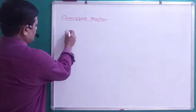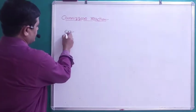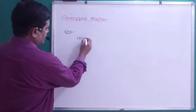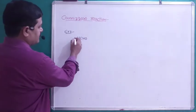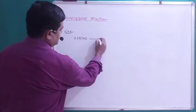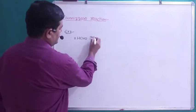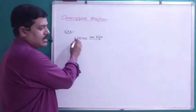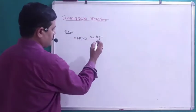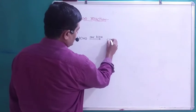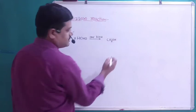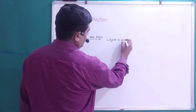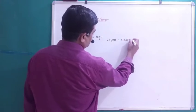Example 2: We will take formaldehyde, HCHO. It does not contain even an alpha carbon. When it is treated with concentrated KOH, one molecule will undergo reduction to form alcohol, CH3OH, and another molecule will oxidize to form a carboxylate — HCOO⁻K⁺.